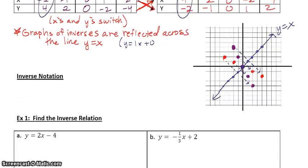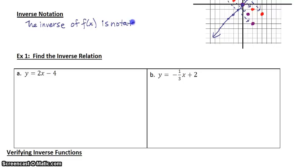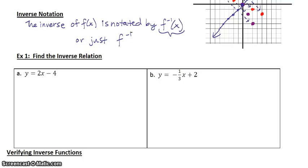Now I want to show you some notation for inverses. Inverses are notated by a negative 1. The inverse of f of x is written as f to the negative 1 of x — it looks like an exponent but it's not. You would read it as 'f inverse of x.' Sometimes I just write f to the negative 1, meaning we're finding the inverse.